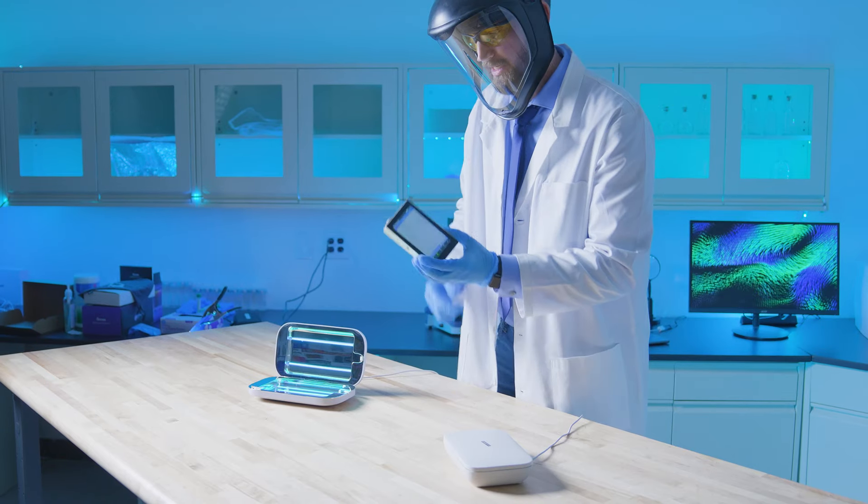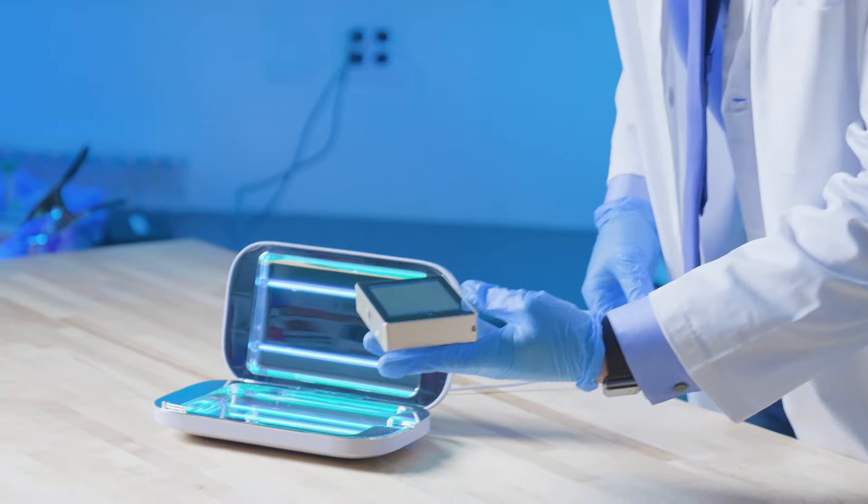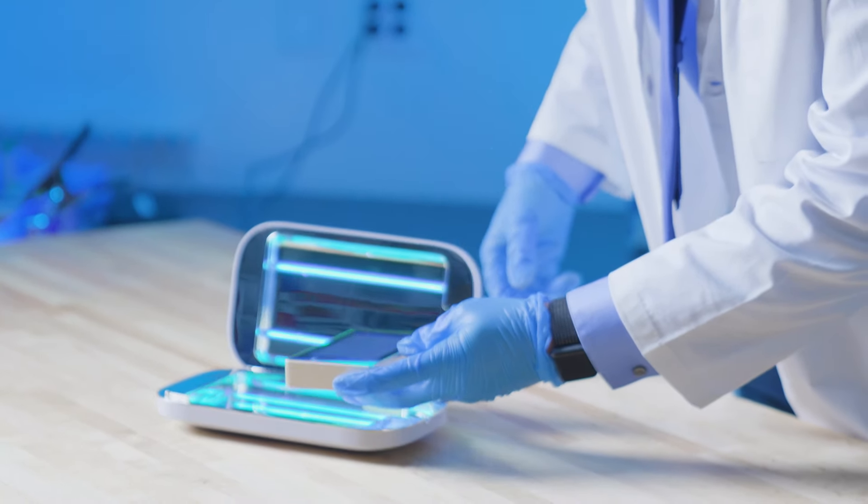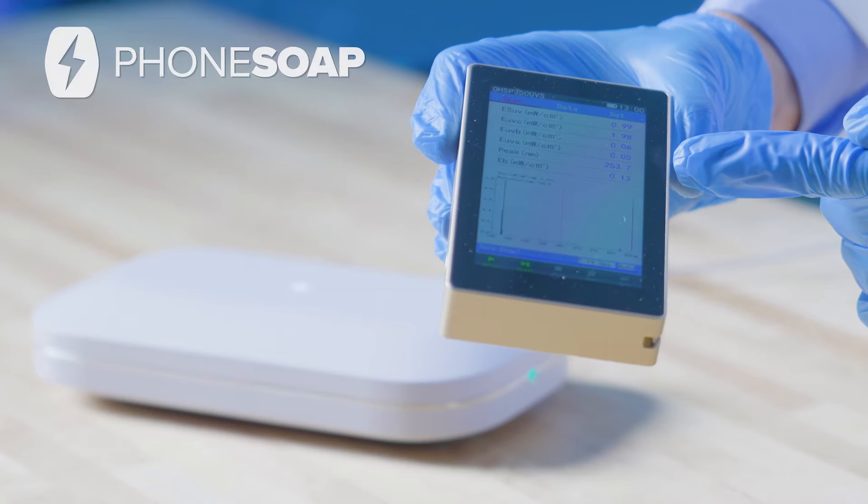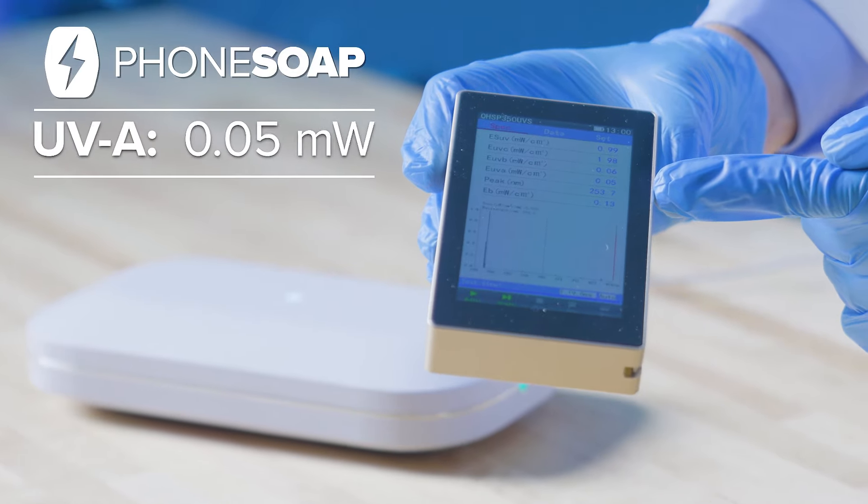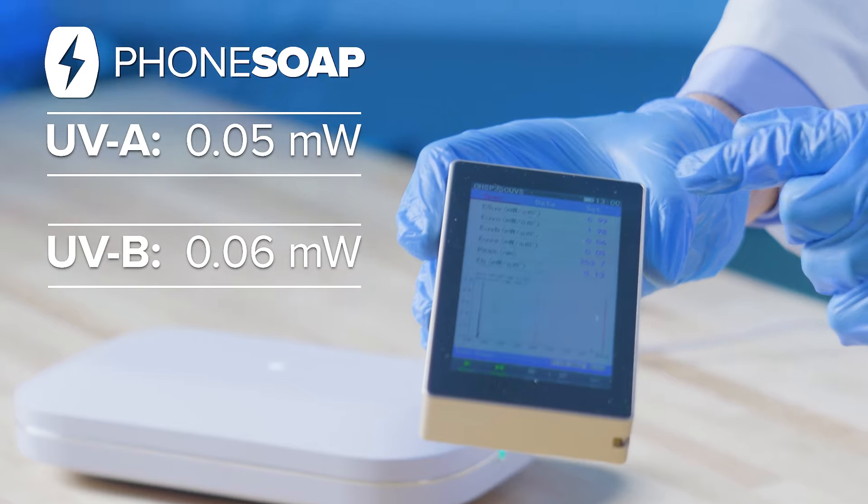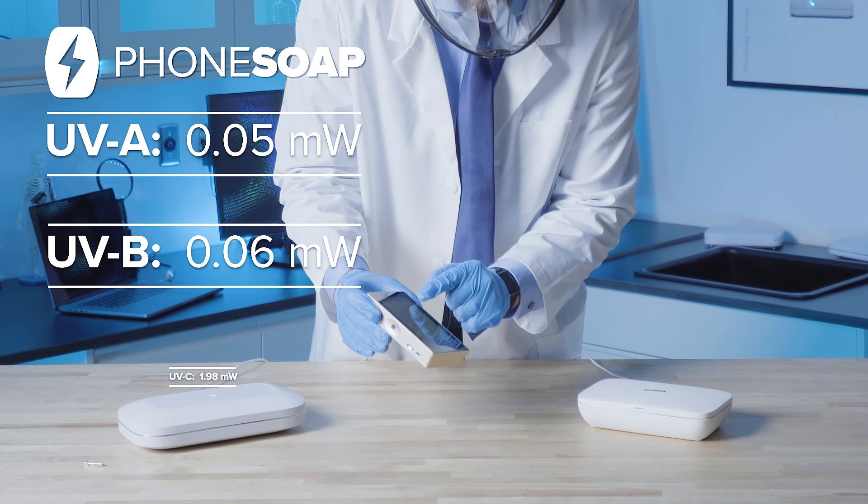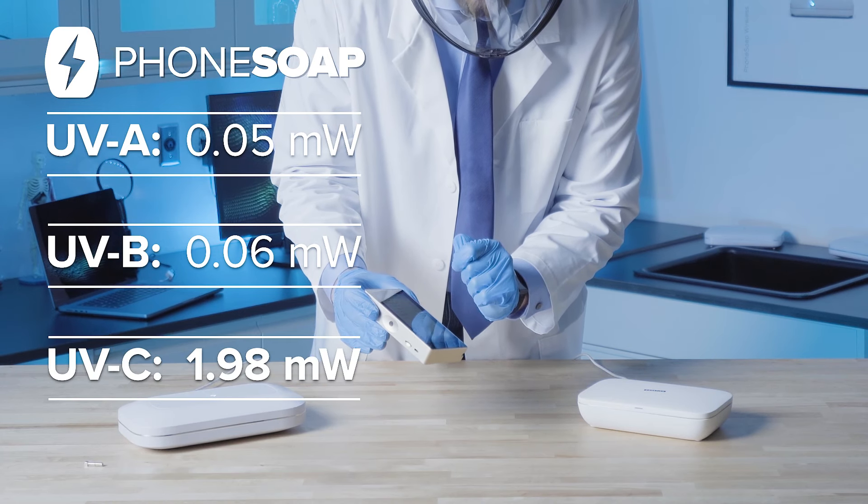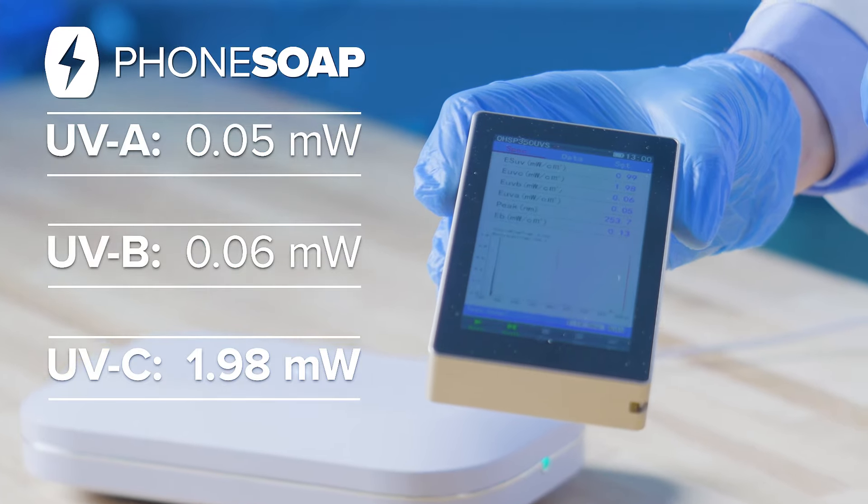I'll take the dosimeter and place it right up against the UV light. There was some UV-A, very small, and some UV-B. But the main factor we're looking at is UV-C exposure, which was at 1.98 milliwatts. 1.98 milliwatts!